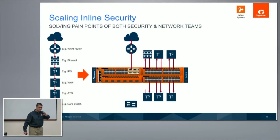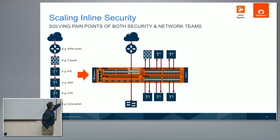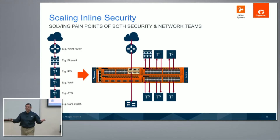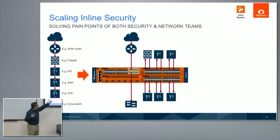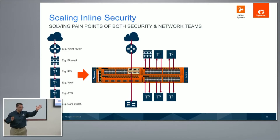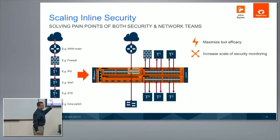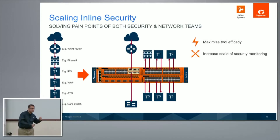Simple solution: look at this arrangement on the left. Let's say you have traffic going through a firewall, IPS, WAF, advanced threat detection, and core switch. Let's say this was running at one gig, this at five, this at ten, and that at ten — what's the speed of the network? One gig. So the whole genesis was: is there a way you can take traffic, send web traffic to a web tool, email to another tool, then load balance the rest and collect it all back, providing efficiencies of scale? That was the whole idea of inline bypass.